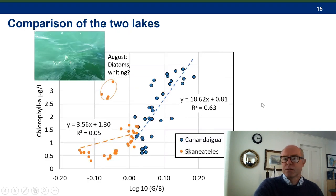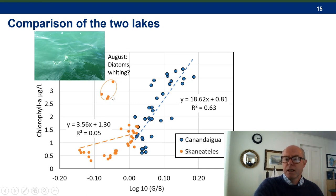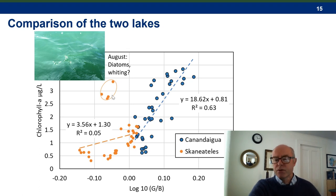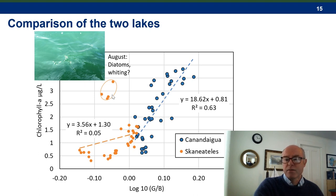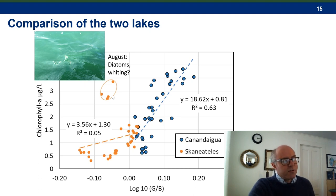I've plotted both lakes on the same graph here, and for the first time you can see a group of samples which plot well off the line. These are all from August, and the picture shows what the water looked like on that day. While we don't have microscopic verification, the algae torch indicated that this is a diatom bloom. We also have whiting events in the Finger Lakes which are not well constrained, so this could have interfered with the measurements. I've taken these anomalous points out of the dataset for final calibration, but I still have questions about them.